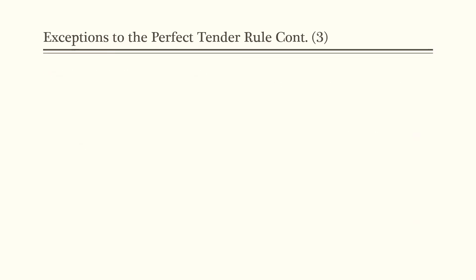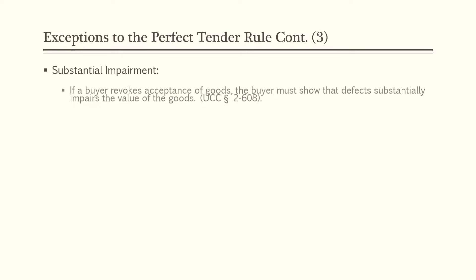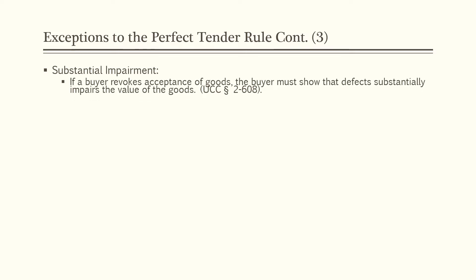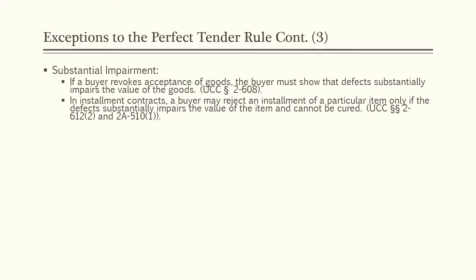The next exception is substantial impairment. If a buyer revokes acceptance of goods, the buyer must show that the defects substantially impair the value of the goods. In installment contracts, a buyer may reject an installment only if the defect substantially impairs the value of the item and cannot be cured. An installment contract is a contract with a series of deliveries over a specified time period, where the buyer pays for each installment when it is delivered — for example, a restaurant entering into a weekly delivery contract with an organic goods supplier for six months.